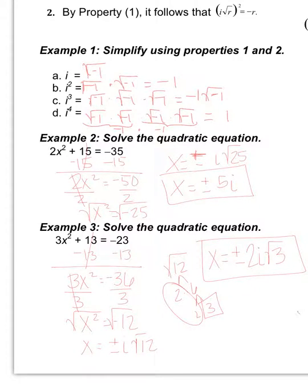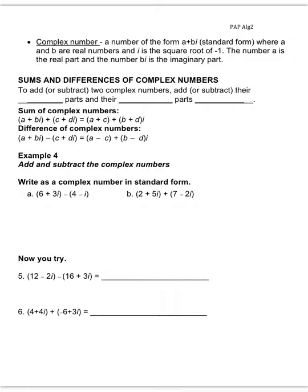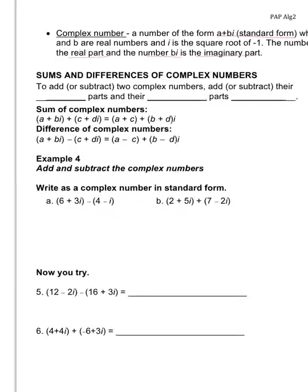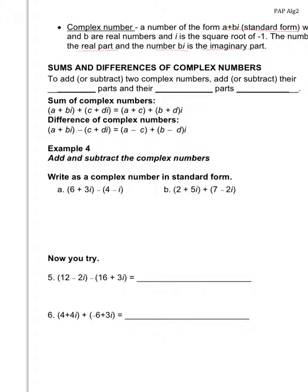A complex number is a number of the form a plus bi — that is your standard form. A and b are real numbers, and i is the square root of negative 1. A represents your real part, and bi represents your imaginary part. To add or subtract two complex numbers, you add or subtract their real parts and their imaginary parts separately.